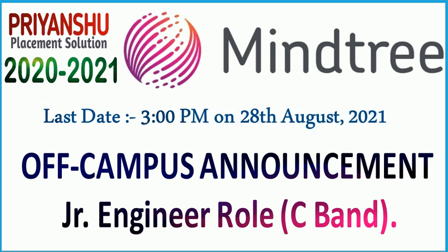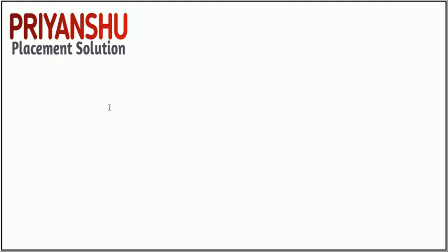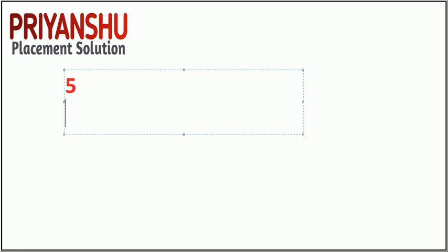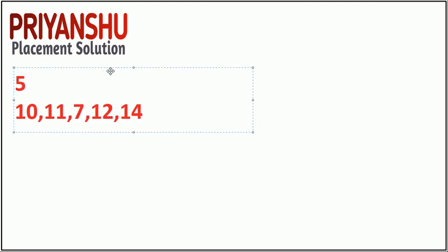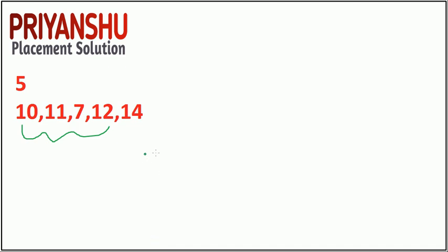Let's start the first type of question. As I mentioned in my previous video about the Tech Mahindra syllabus, the coding questions are not tough in Tech Mahindra. The question requires you to find the difference between the maximum and the minimum element. For example, the maximum of the list is 14 and the minimum is 7, so 14 minus 7 equals 7.